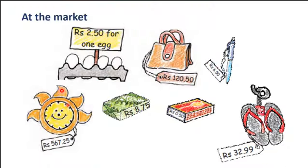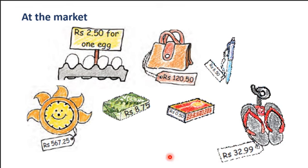Our next topic is 'At the Market.' Here some things are given with price tags. This is an egg, and because it is from a previous book, the prices shown may differ. You can see that one egg costs 2.50 rupees, that means 2 rupees 50 paise. Here is a ladies purse — a ladies handbag — which is like 1650 rupees.